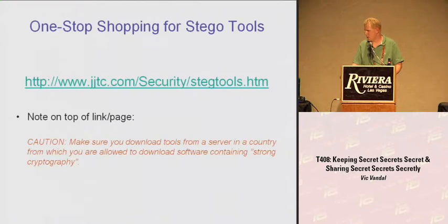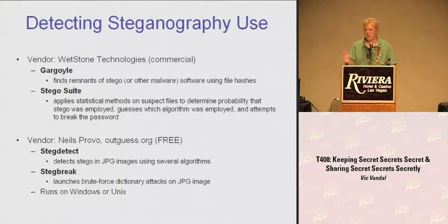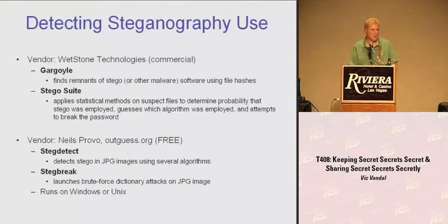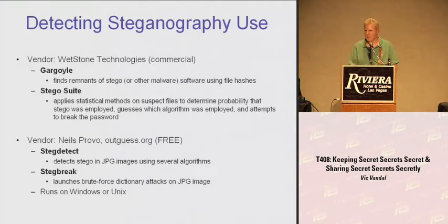Detecting steganography use: there are tools that check NSRLDB hashes of all common programs. You run those on an operating system you're doing forensics on, and if it detects that, say, Explorer.exe has different attributes than it's supposed to have, maybe that executable has been modified. These programs also detect the existence of stego software. If you're using stego to protect secrets, use it offline and don't keep your secrets and your stego software on the same machine. If your machine gets seized and the stego software is found, every file becomes suspect.